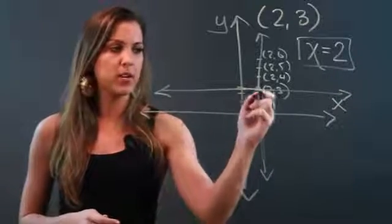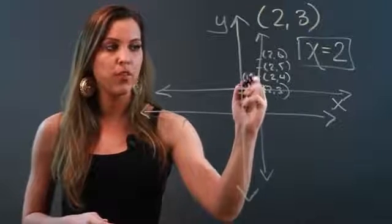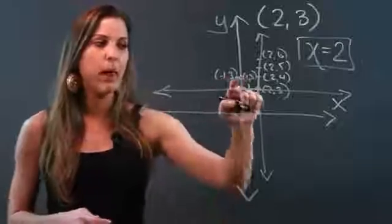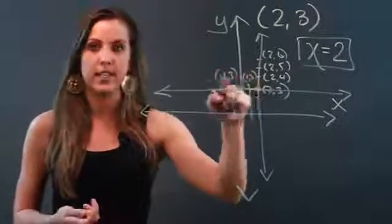So for example, this point here is 2, 3. This one here is 1, 3. This is 0, 3. This is negative 1, 3. So my y-coordinate is consistent. It's always going to be 3.